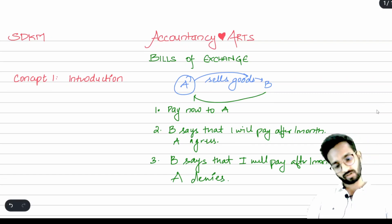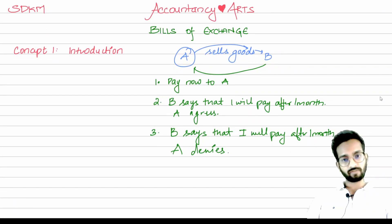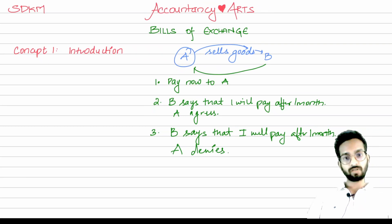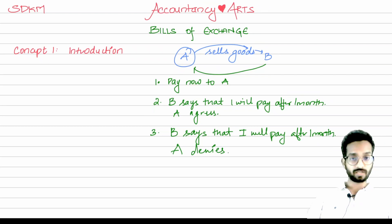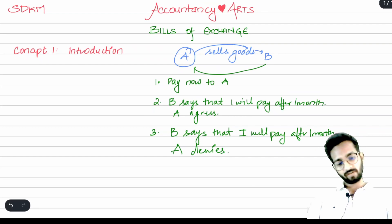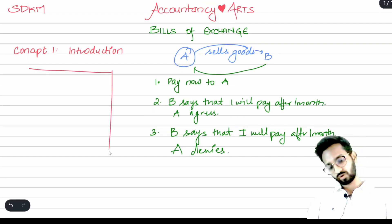B says 'Okay fine, if you want the payment now, what can we do, you tell me.' A says 'I will prepare a document and you have to sign it, saying that you will pay me after two months.' Even then A is not getting the payment right now — he will get it after two months — but it becomes proof that he has to take money from B. A will prepare a document.